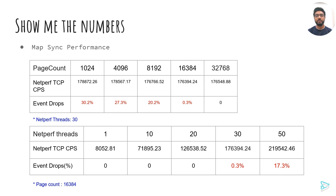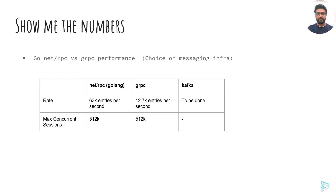We used netperf to benchmark connections per second, varying two metrics: page count and network sets. Initially we saw some event drops, but it came to zero drops when we set the page count to 32k. These bottlenecks are due to the eBPF perf buffer and its reader-side implementations. Next we compared two RPC infrastructures to sync the connection entries to the peer. We observed that net RPC performance was better than gRPC. We intend to make these numbers better by doing further optimizations along with integration with Kafka as well.